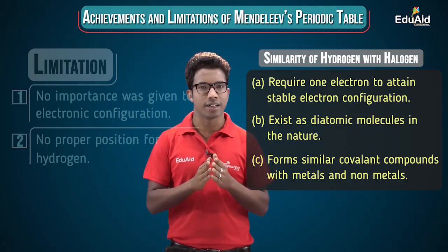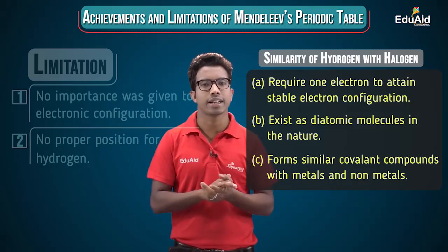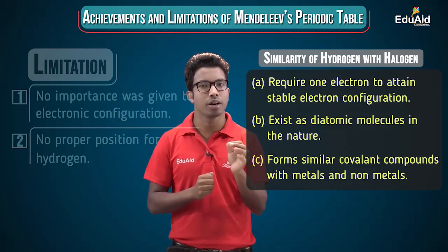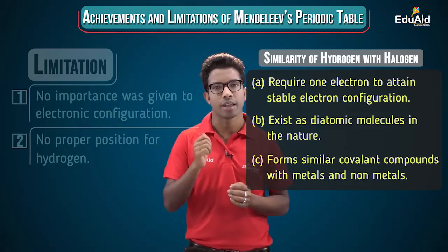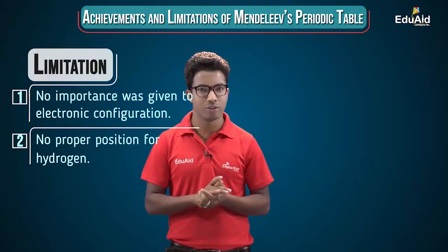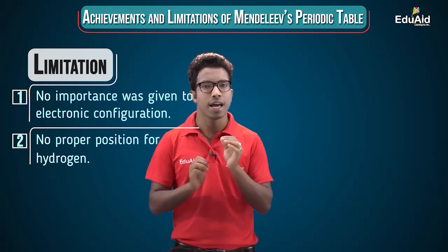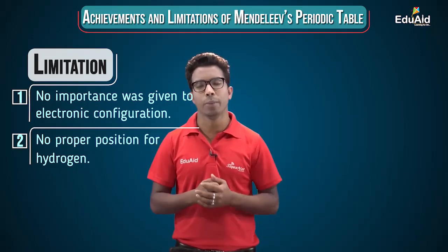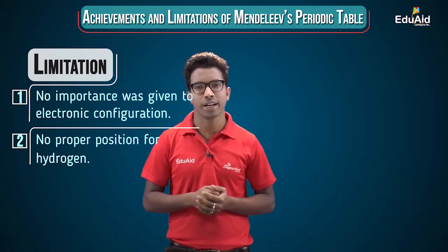So we can see that hydrogen shows certain characteristics of alkali metals and also certain characteristics of halogens. Due to this dual nature, Mendeleev got confused about giving any fixed position to hydrogen, and this is one of the biggest limitations of Mendeleev's periodic table.